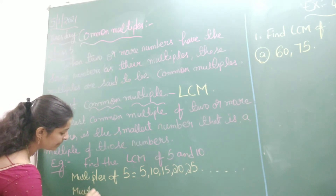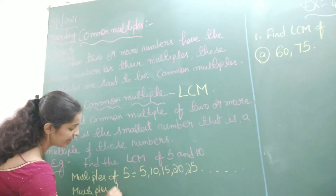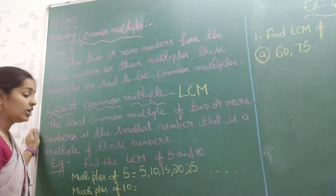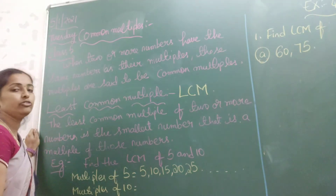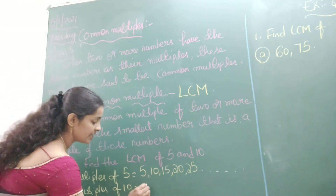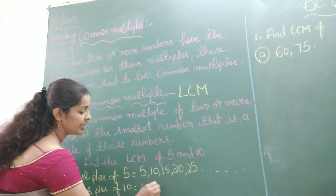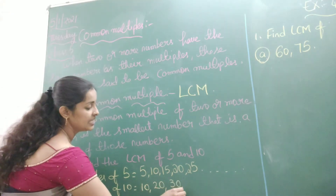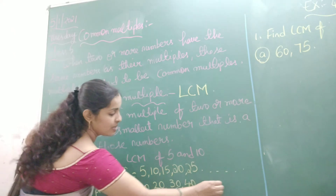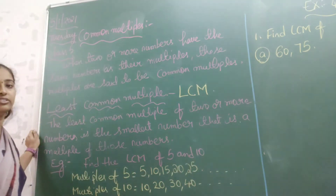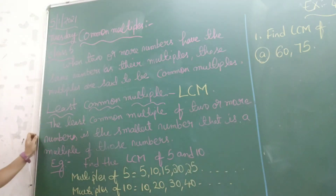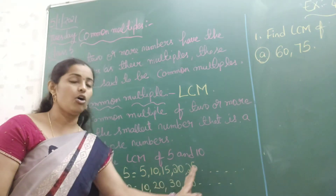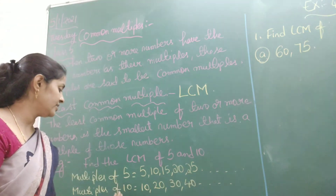Now write down the multiples of the number 10. The multiples of 10 are: 10, 20, 30, 40, and so on. These are the multiples of the number 10.